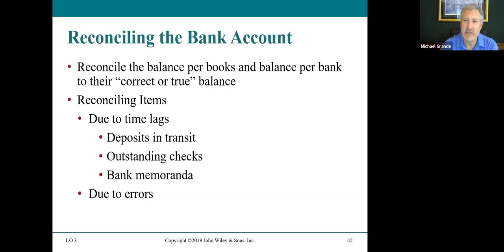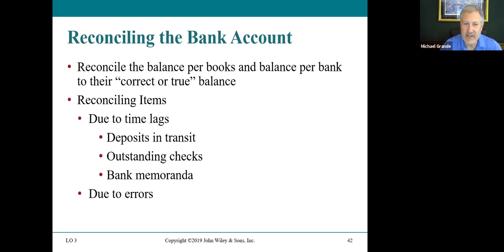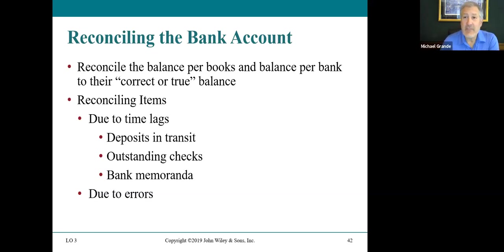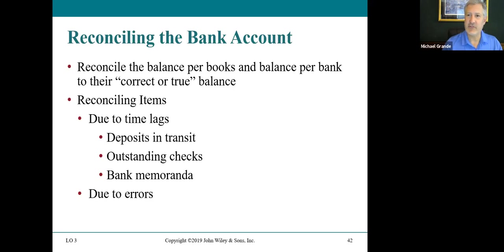Reconciling the bank account: we reconcile the balance per books — the balance in the cash T-account — and the balance per the bank from the bank statement to a correct or true balance. There will be reconciling items due to time lags. Deposits in transit are deposits recorded on the company's books but not yet on the bank statement. Outstanding checks are checks written and mailed to vendors but not yet presented at the bank. There may also be bank service charges and errors.